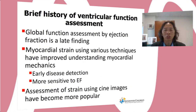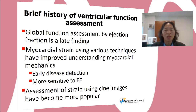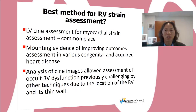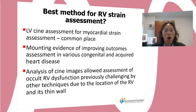Biventricular EF has been used as a gold standard for assessing ventricular function and outcomes. However, declining EF is typically a late finding. Myocardial strain may allow earlier disease detection and has been shown to be more sensitive than EF at detecting occult disease. The assessment of myocardial strain using existing CINE images has become more popular as it allows retrospective analysis without the need for additional sequences, and RV strain assessment using feature tracking-based software, including Q-Strain, overcomes some of these limitations.